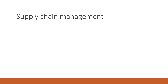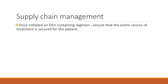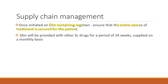Regarding supply chain management: once a patient is started on a Delamanid-containing regimen, it must be ensured that the entire course of treatment is secured. Delamanid is provided alongside other second-line drugs for 24 weeks, supplied on a monthly basis, with each box containing 48 tablets.